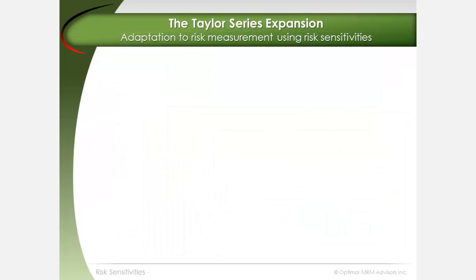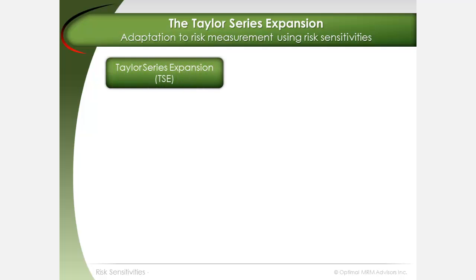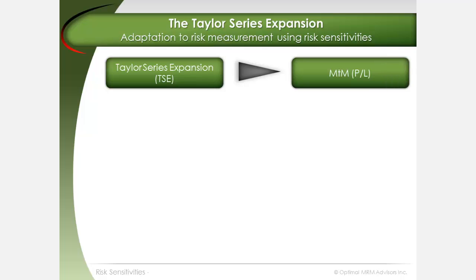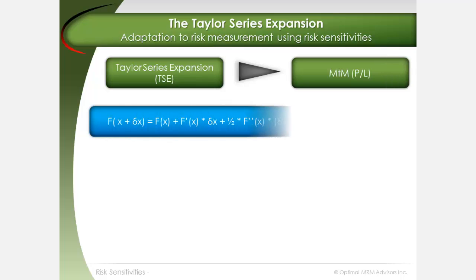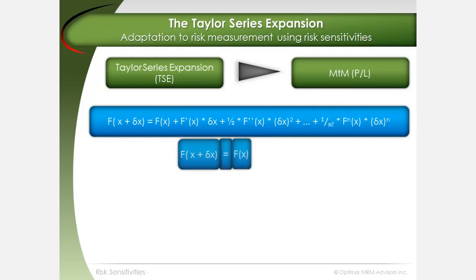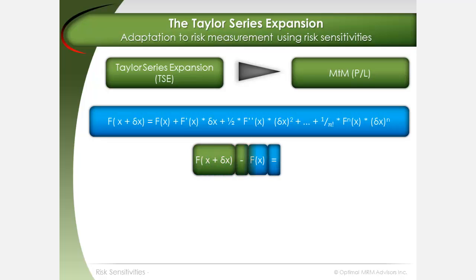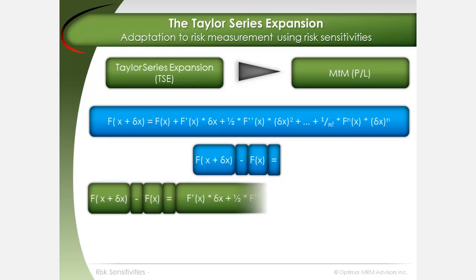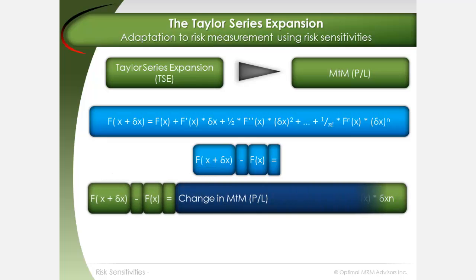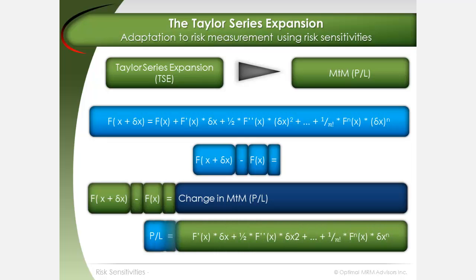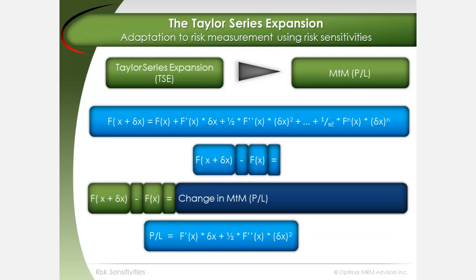The general mathematical formula known as the Taylor series expansion presents a practical way to measure changes in mark to market using risk sensitivities. We can rearrange the formula to provide f(x + Δx) − f(x), which can represent the change in mark to market, or P&L, for an investment. For relatively simple investments, the first two terms of the Taylor series expansion are generally sufficient for estimating P&L.